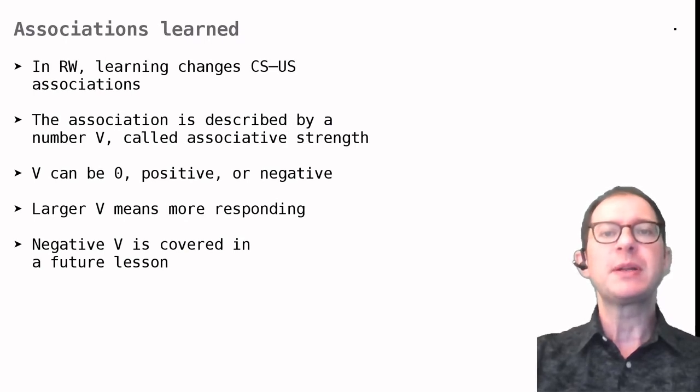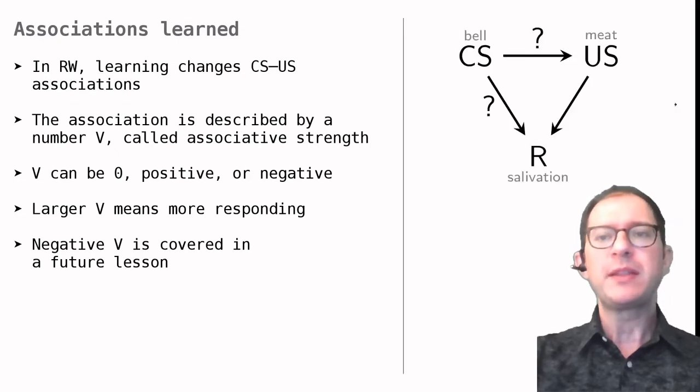Before talking about how RW learns, let's say something about what it learns. We saw in an earlier lesson that Pavlovian conditioning could actually mean a couple of different things. It could mean the learning of a CS-US association, of a CS-R association, or of both.